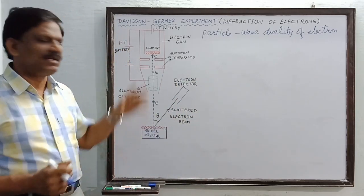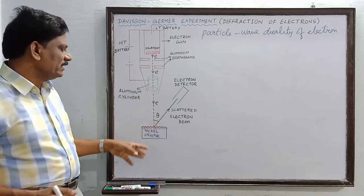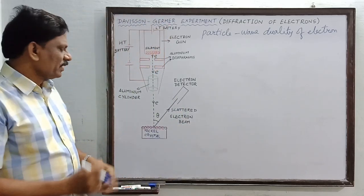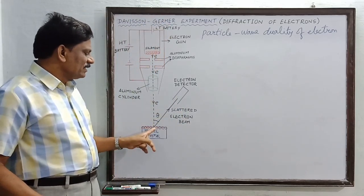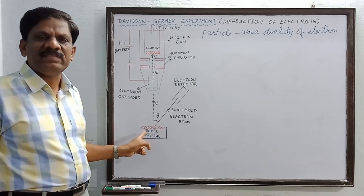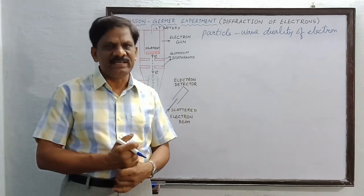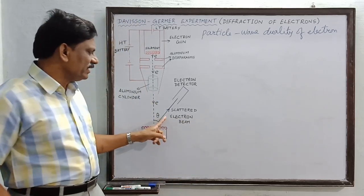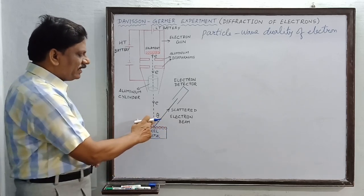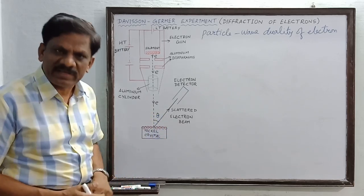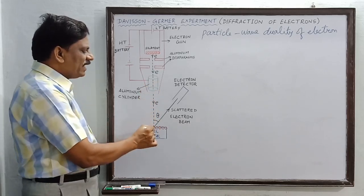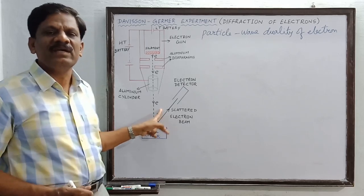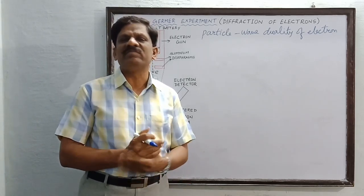The electrons emitted by the electron gun are accelerated and then allowed to be incident on a nickel crystal. When these electrons fall on the atoms of the nickel crystal, they get scattered in different directions. Only one such direction is shown in the picture. The angle between the incident direction and the scattered direction, theta, is called the angle of scattering. This scattering effect is due to the particle nature of the electron.